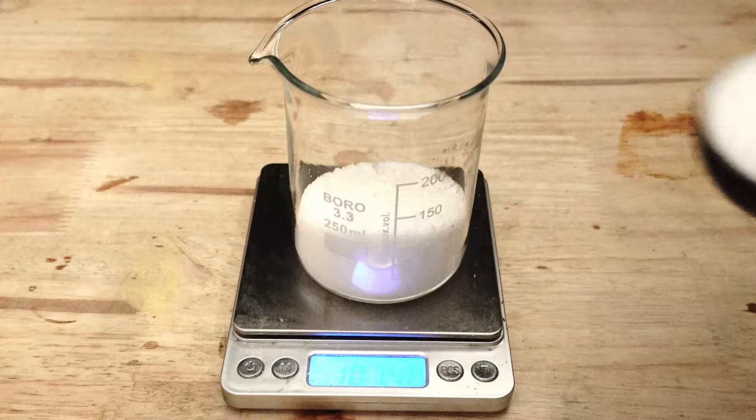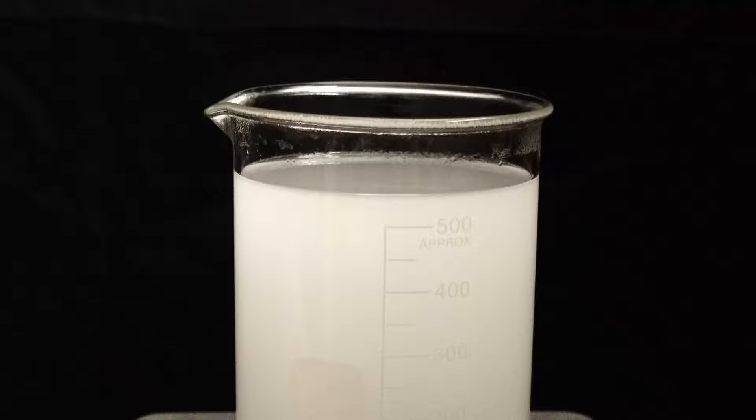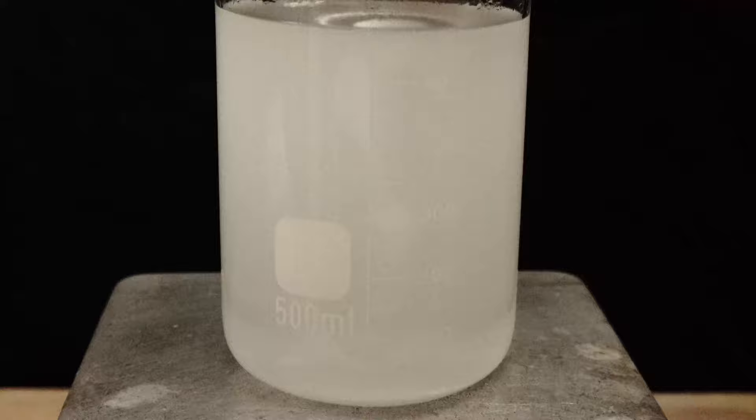We start off by weighing 180 grams of sodium hydroxide drain cleaner and add this to 500 milliliters of distilled water. I then add a stir bar and stir everything until the solution becomes crystal clear.